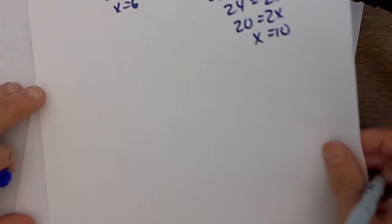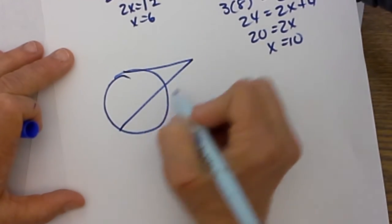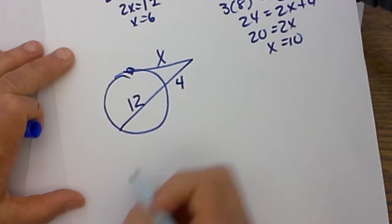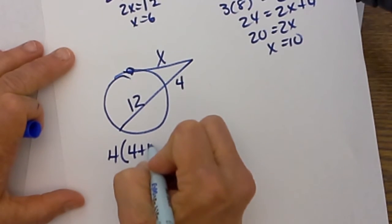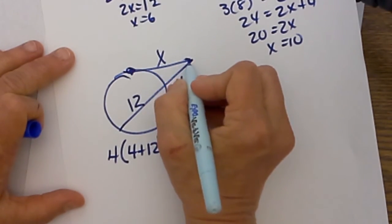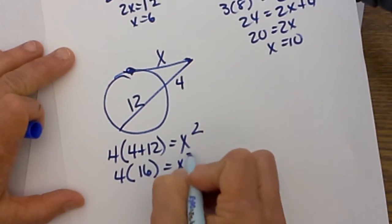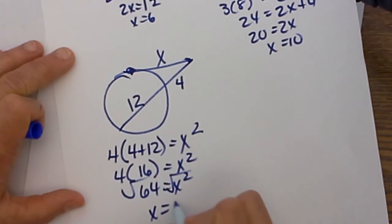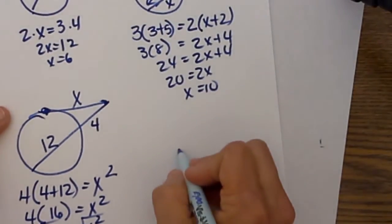Now let's look at a secant-tangent. So here is our circle. We have a tangent segment and then a secant. Let's say that this is 4 and this is 12 and we don't know our tangent segment. The secant segment you treat the same. You take 4 times the whole thing, which is 4 plus 12, and that is equal to the tangent segment squared. So we are going to have 4 times 16, which is x squared, and 4 times 16 is 64. So that means x is equal to, because you take the square root of both sides, 8. It wouldn't be negative 8 because you can't have a segment that is a negative value.